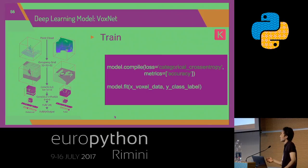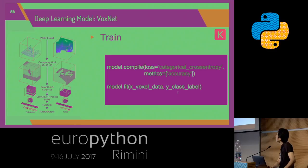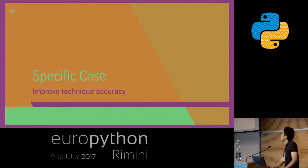You also define the loss function and metrics, then train the data. The settings include the voxel mapping data and the classifier level.